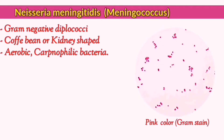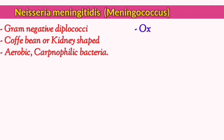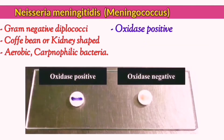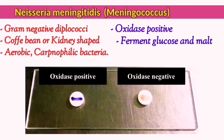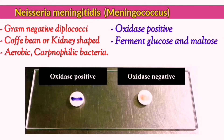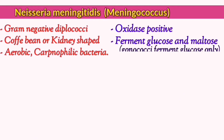The most important chemical characteristics of this bacteria are that it is oxidase positive and that it can ferment glucose and maltose, which contrasts with Neisseria gonorrhea, which can only ferment glucose.